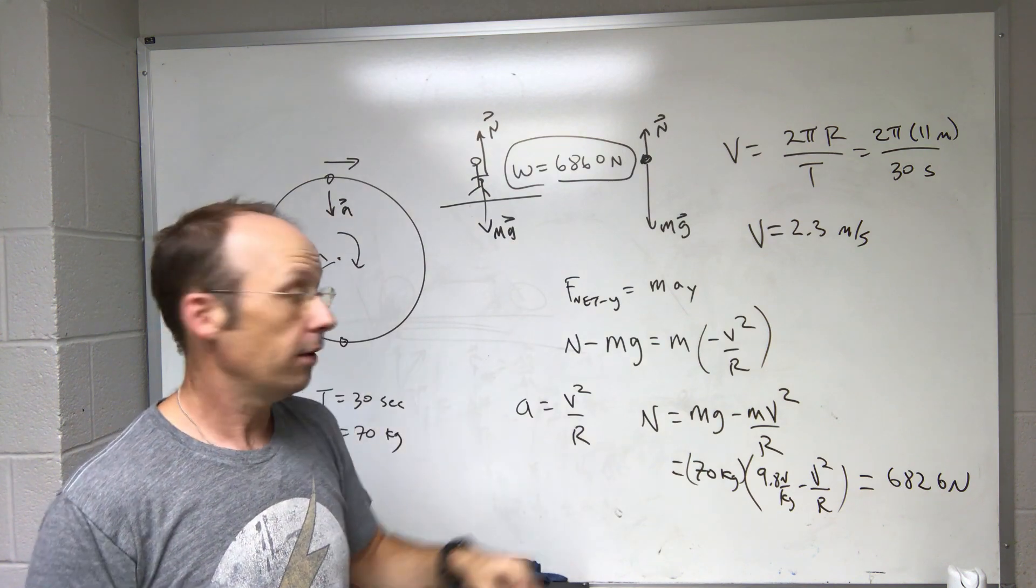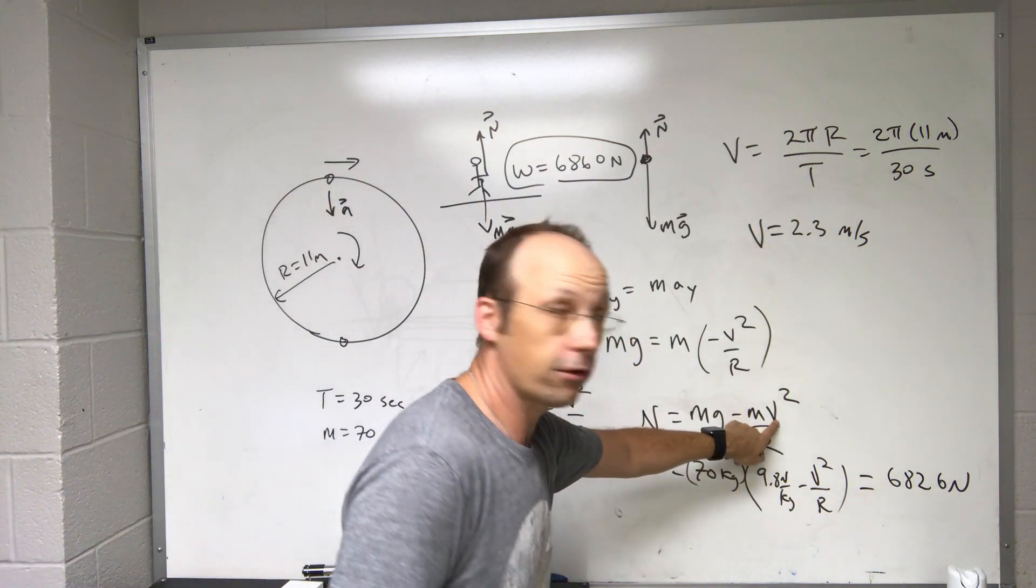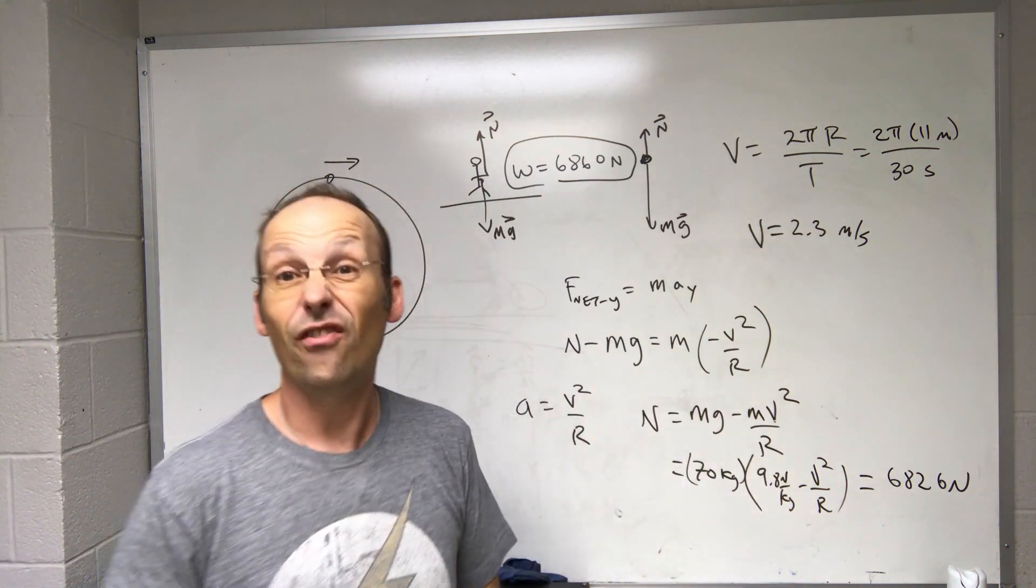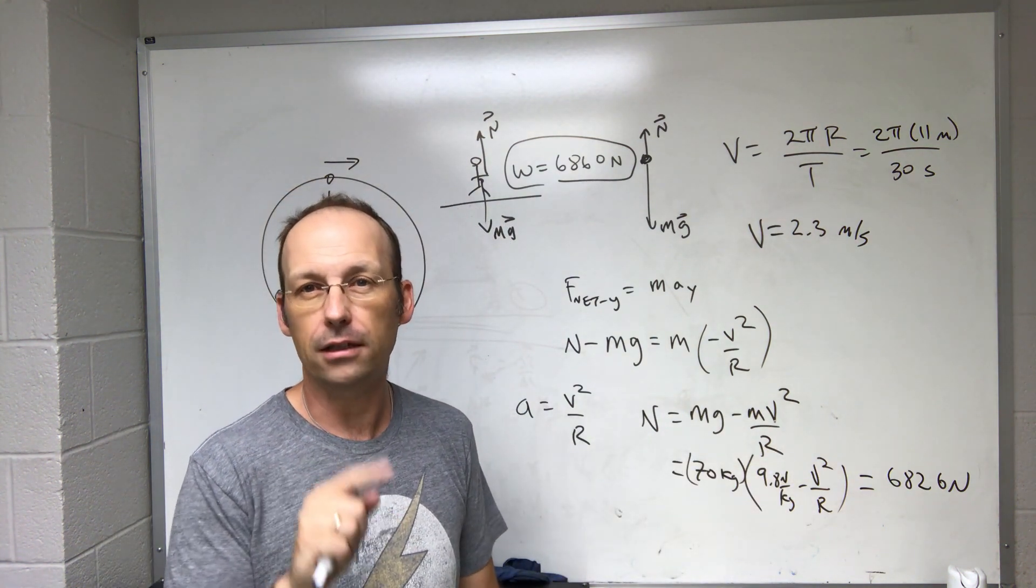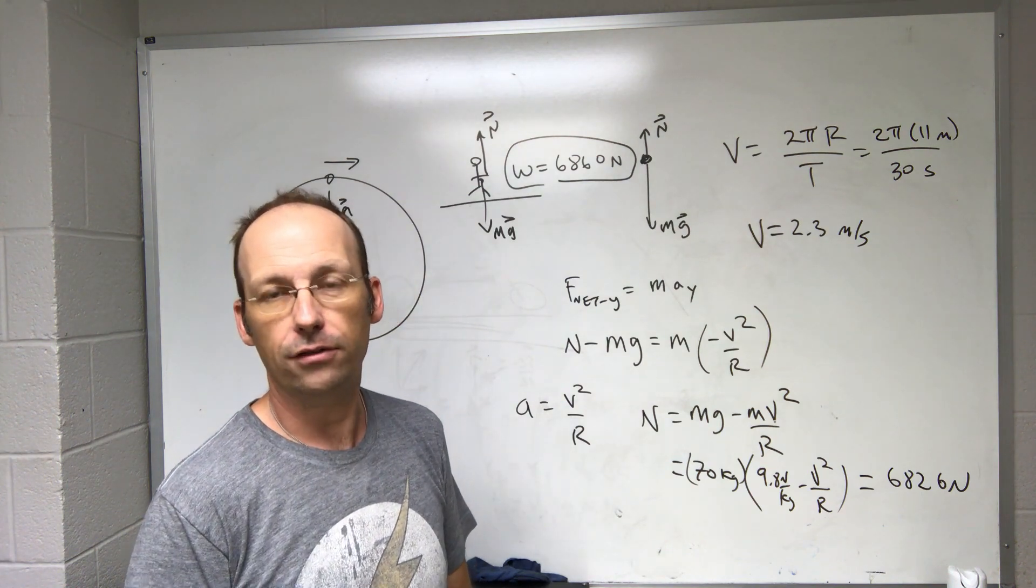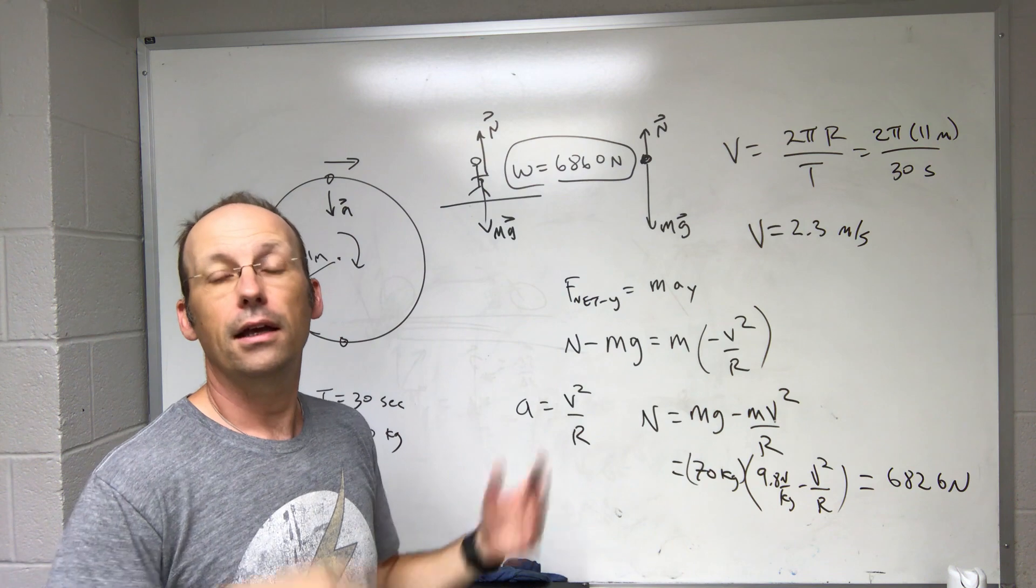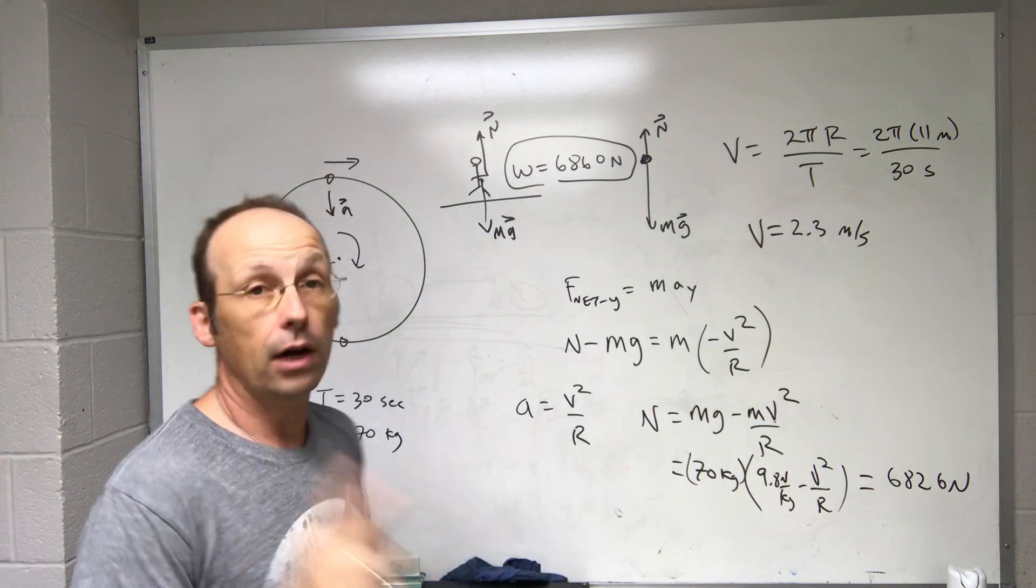So a little bit less. You feel a little bit less in your weight at the top. If you went faster, you'd have a greater speed and you'd subtract even a greater number and you'd feel even lower weight. In fact, you could get to zero apparent weight at the top if it's going fast enough. You might want to calculate that and see how fast it should go. But this is a realistic thing. You don't feel super lower weight. It's just more of a realistic Ferris wheel.